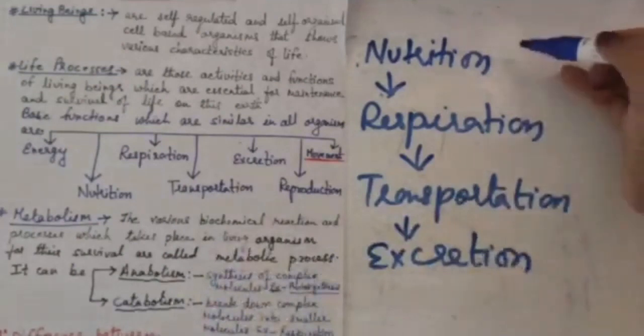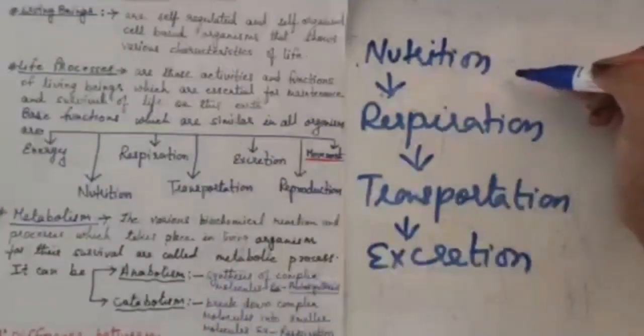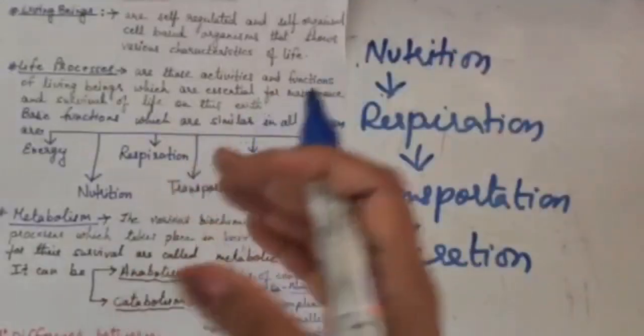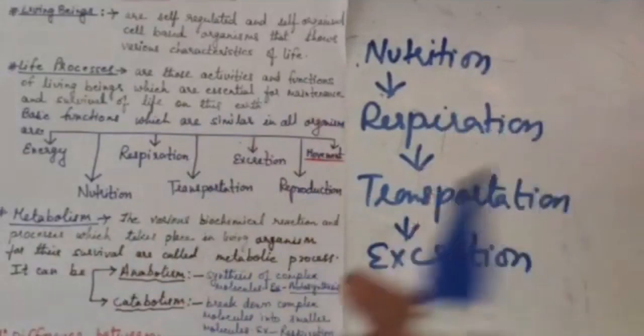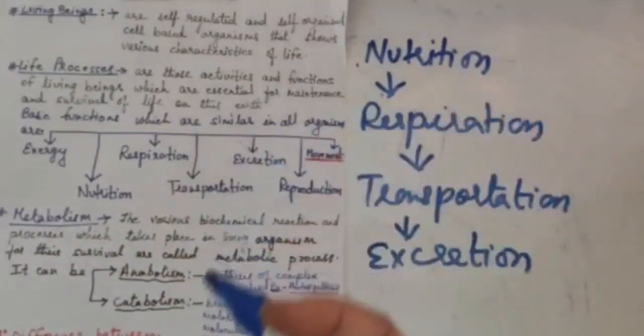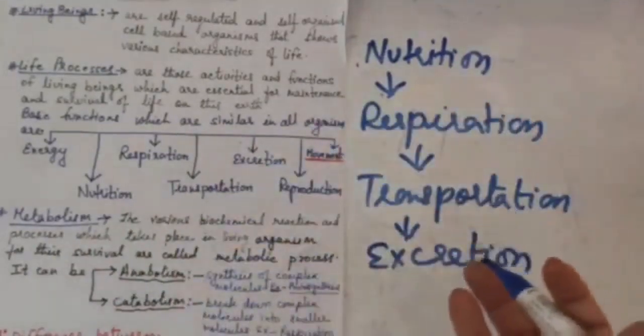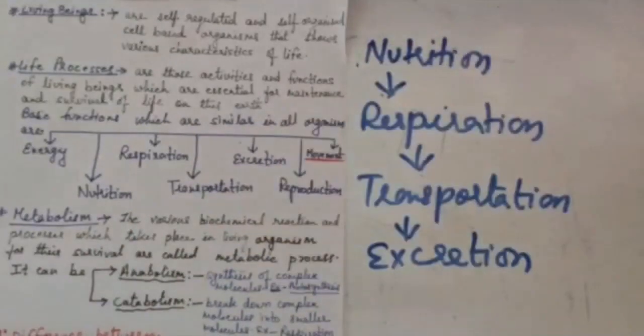Now we see how these life processes are interrelated to each other. First is nutrition, how we obtain food. Next is respiration where every living being requires energy for working out the body machinery. For that most of the organisms use oxygen and this process is known as respiration.